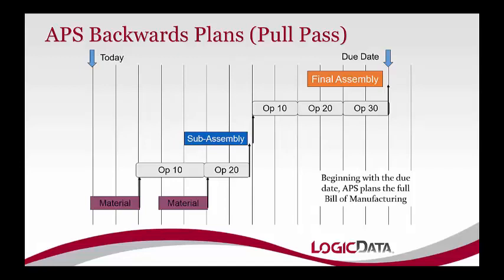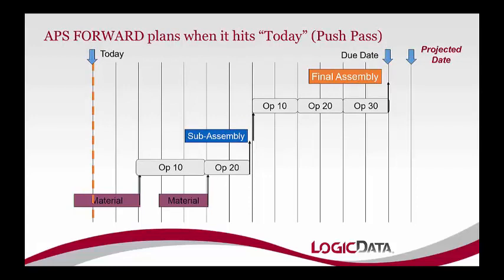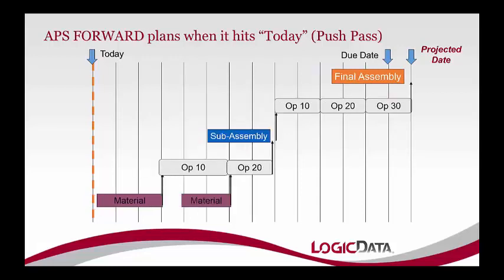But what if APS says it can't make this in time? Let's say that last material has a three-day lead time, meaning we would have had to order it yesterday. One of the benefits of APS is it knows you don't have a time machine. Instead of recommending you travel back in time, APS says it can't order that material until today, which pushes out the subassembly start, the second operation, and the whole final assembly by a day. APS then returns a projected date of one day past the due date — so you know honestly when the work can be done.